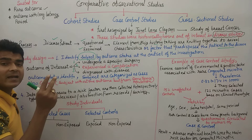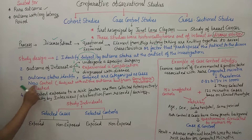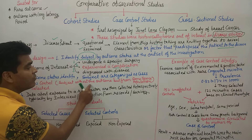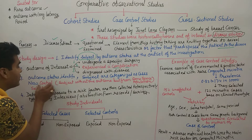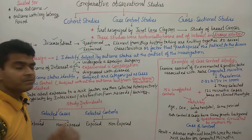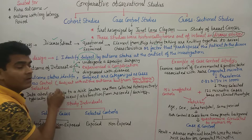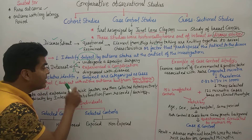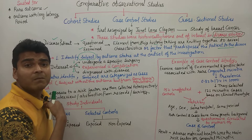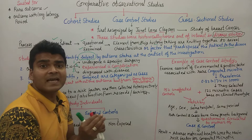The next task is to identify the controls. Controls are subjects without the outcome but from the same source population. The control patients do not have the target disease, but they must come from the same population as the cases. For example, if cases are from India, we take controls from India as well, not from Japan.